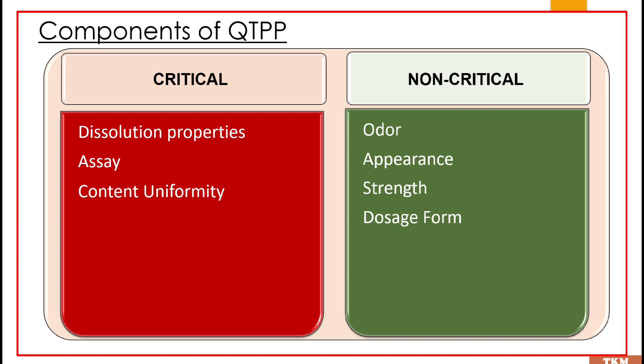For example, if there are variations in dissolution properties or content uniformity, that can cause harm to a patient. Whereas odor, appearance, and physical factors — if there is any change in these, the severity of harm to a patient won't be much severe.